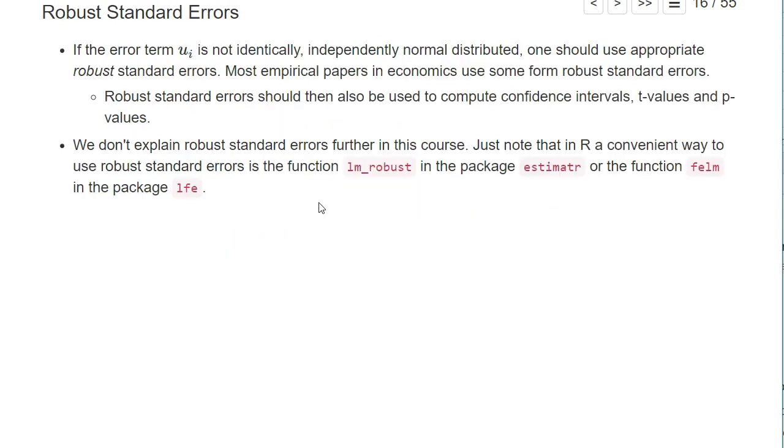I have already briefly discussed that there are different ways to compute standard errors, not only the default standard errors from the LM function, but also robust standard errors. If you use robust standard errors, the t-values, p-values, and confidence intervals will change correspondingly. All these statistics can be computed as a function of the standard error and the estimate.